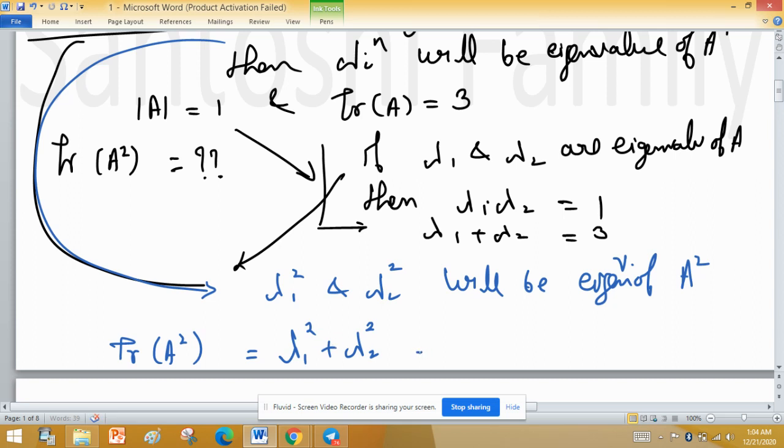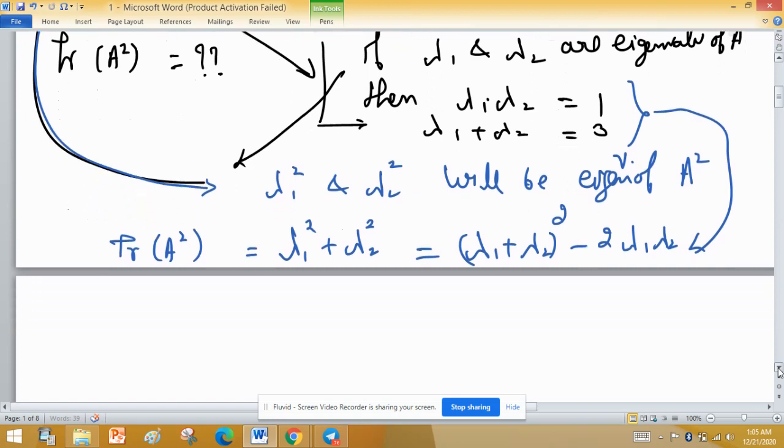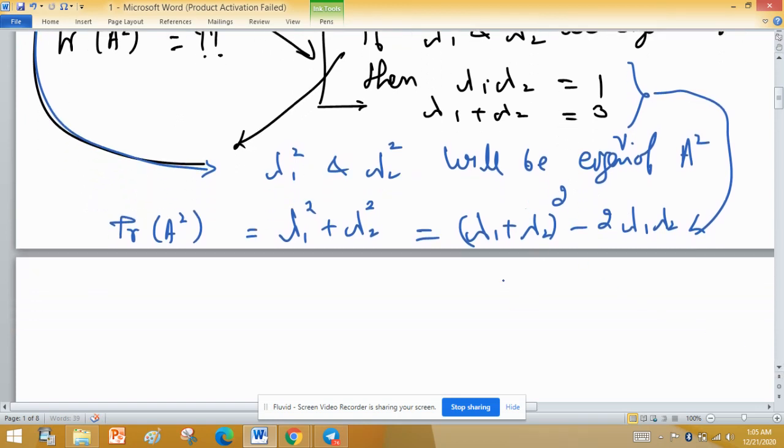And this can be written in terms of these two facts: lambda 1 plus lambda 2 whole squared minus 2 times lambda 1 lambda 2. The benefit of this is that trace of A and determinant of A are both given to us.